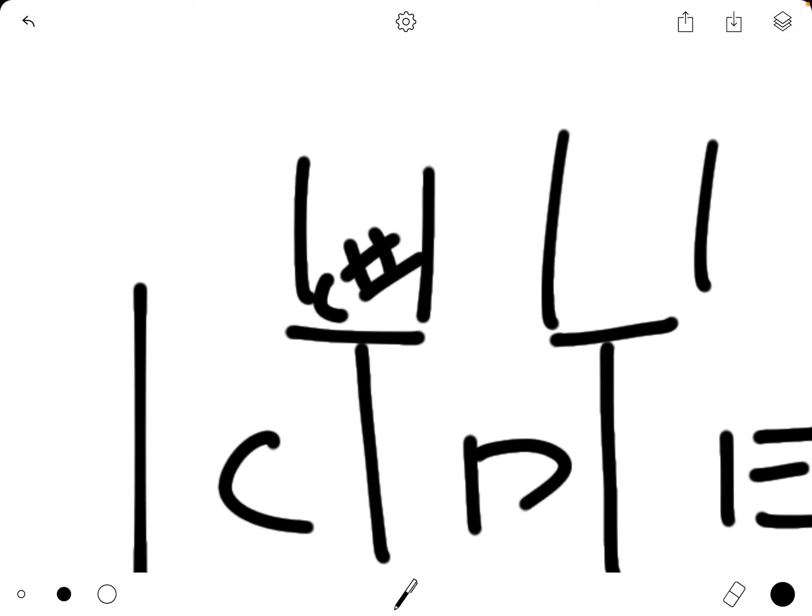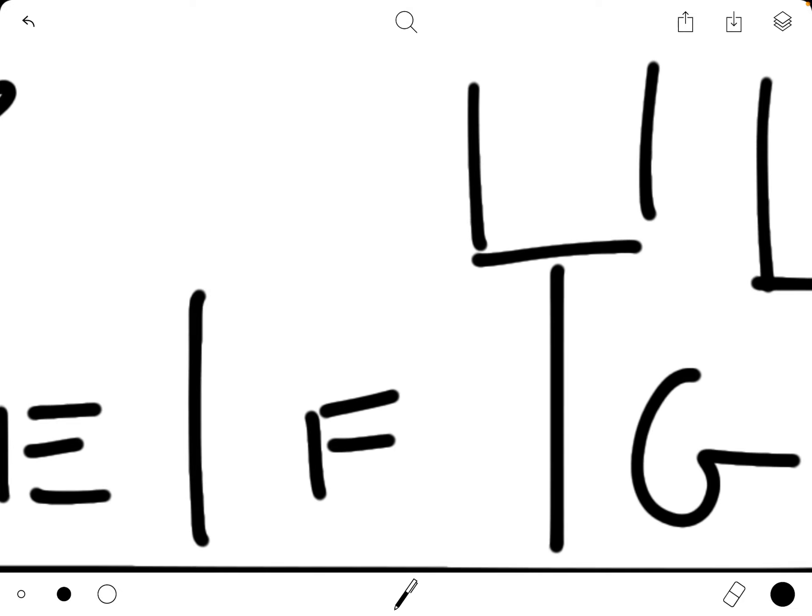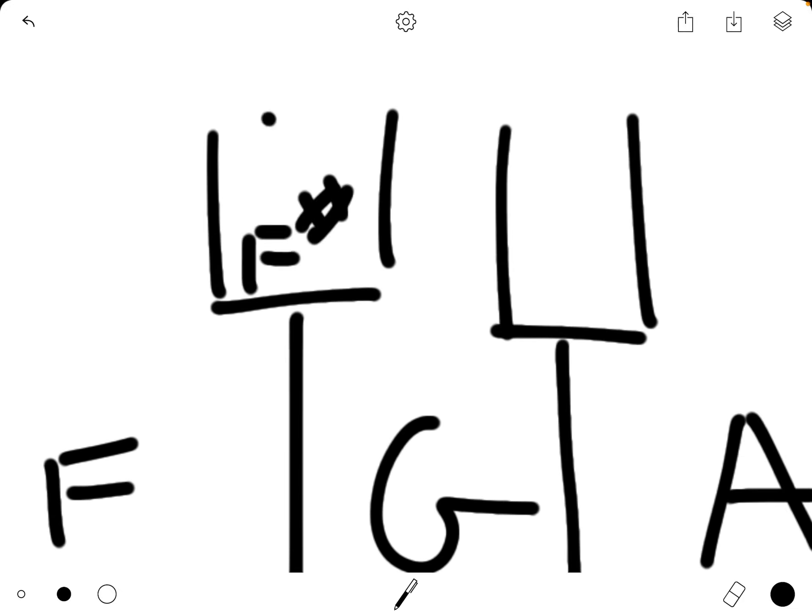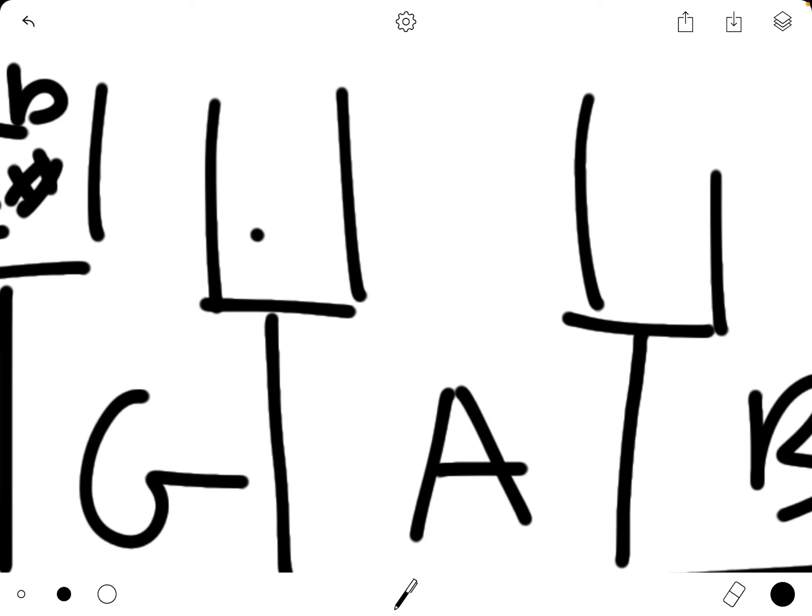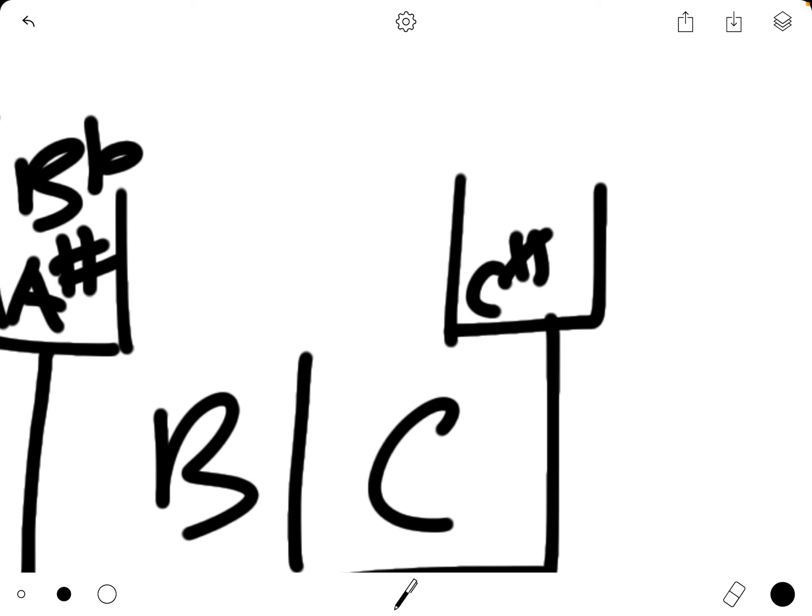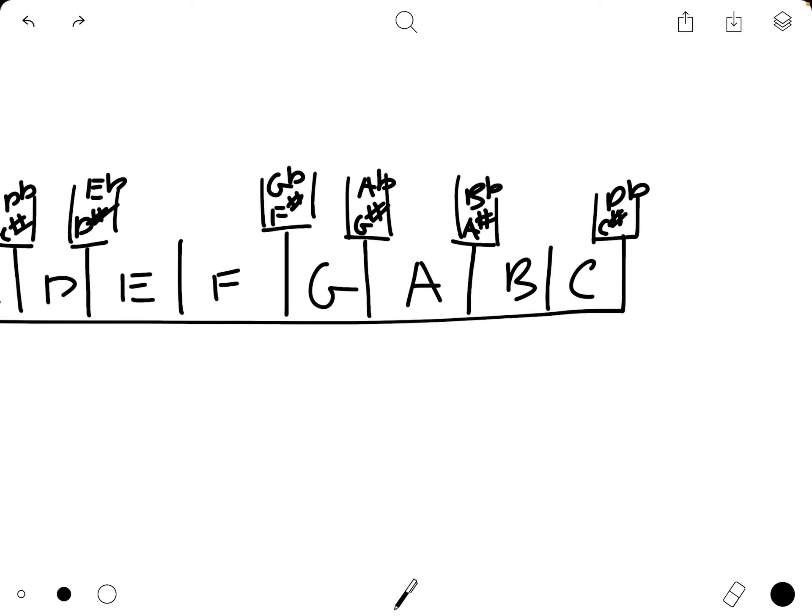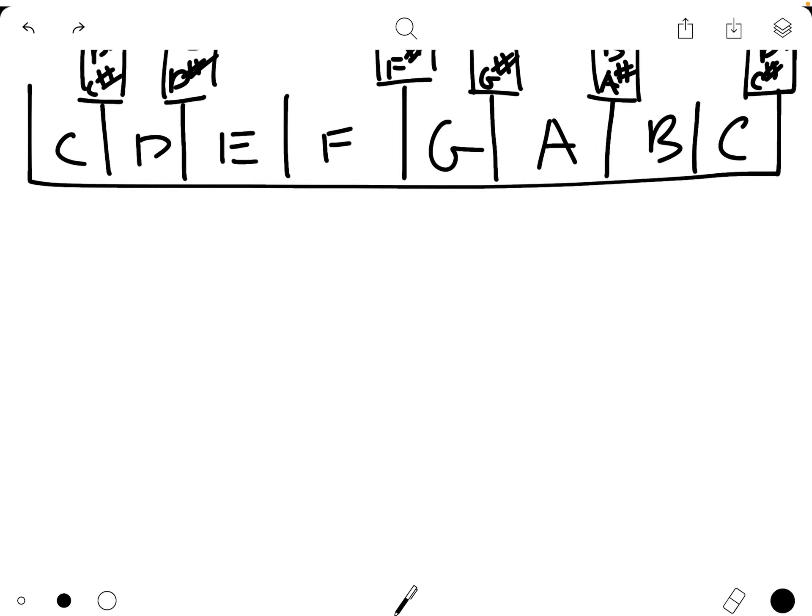And then fill in C sharp, which is enharmonic to D flat, and then D sharp and E flat, and then F sharp and G flat, and then G sharp and A flat, A sharp and B flat, and then C sharp is the same thing as D flat for those enharmonic notes. Enharmonic is when you have two different names for the same note.